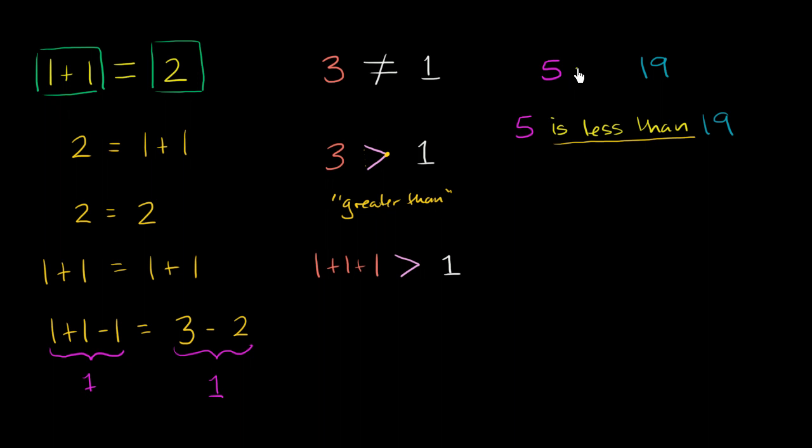So here 5 is a smaller quantity, so I'll make the point point there, and 19 is a larger quantity, so I'll make it open like this. And so this would be read as 5 is less than 19. So 5 is a smaller quantity than 19.